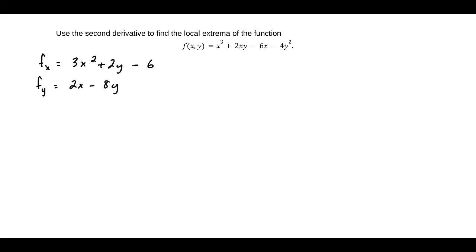Critical values can be found by making sure that both these are equal to 0. It's easier to solve fy equal to 0 because that would produce an equation that is x equals 4y.